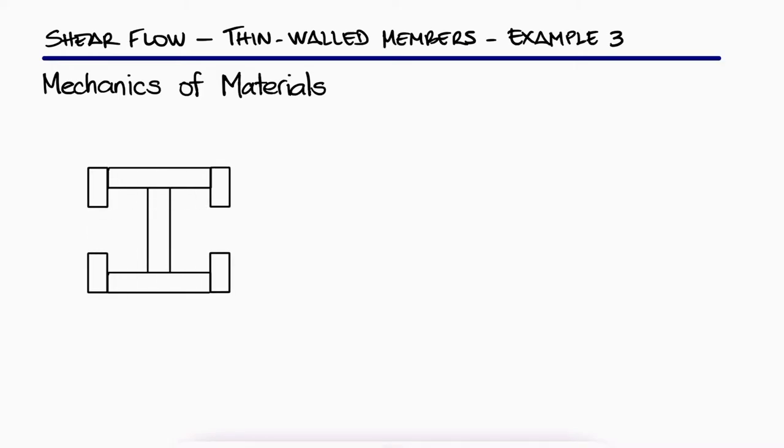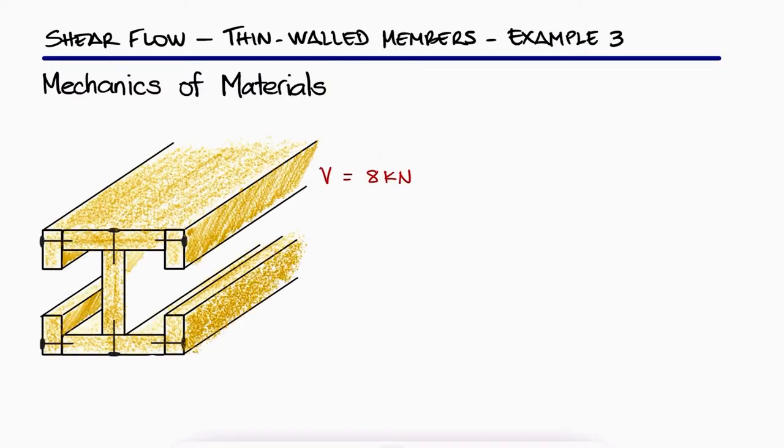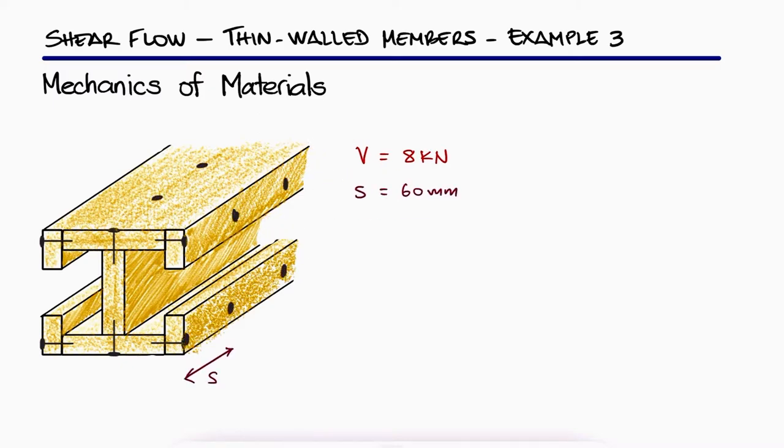The built-up wooden beam shown is subjected to a vertical shear of 8 kN. If the nails are spaced longitudinally every 60 mm, what is the shearing force in the nails at location A?